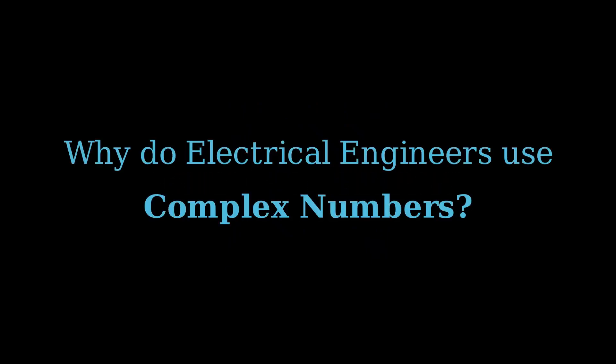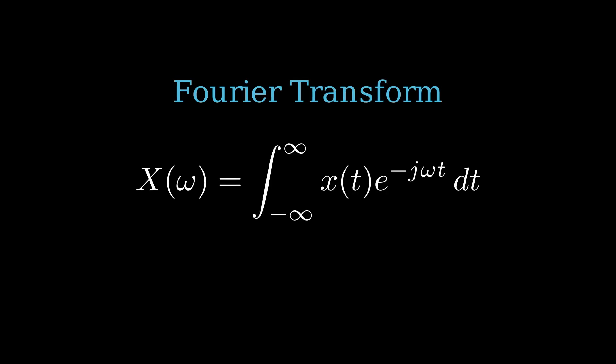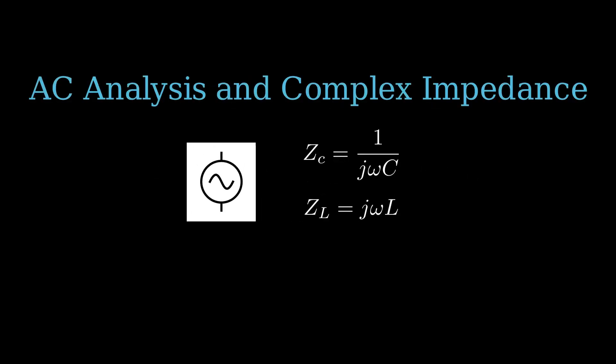Let's talk about complex numbers. Why do electrical engineers use complex numbers? Complex numbers show up in Euler's relation, they also show up in the Fourier transform, and they also show up in AC circuit analysis with impedance.